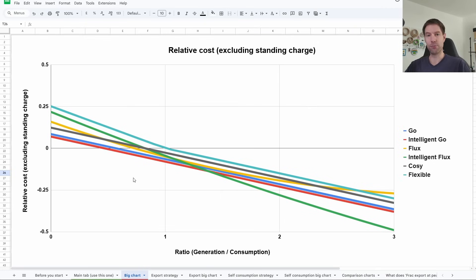For reading this chart, you would say: what's my ratio between generation and consumption for a particular month? For example, for us in June it was about 2.7, so that'll be way up at this end. If I read this up, the first line I hit is Intelligent Flux, which suggests we should be on Intelligent Flux for June and probably all of the summer months. Then Intelligent Go would be next if I didn't want to use Intelligent Flux, then regular Go, then Cozy, and then Flux and Flexible bringing up the rear as the least cost-effective tariffs.